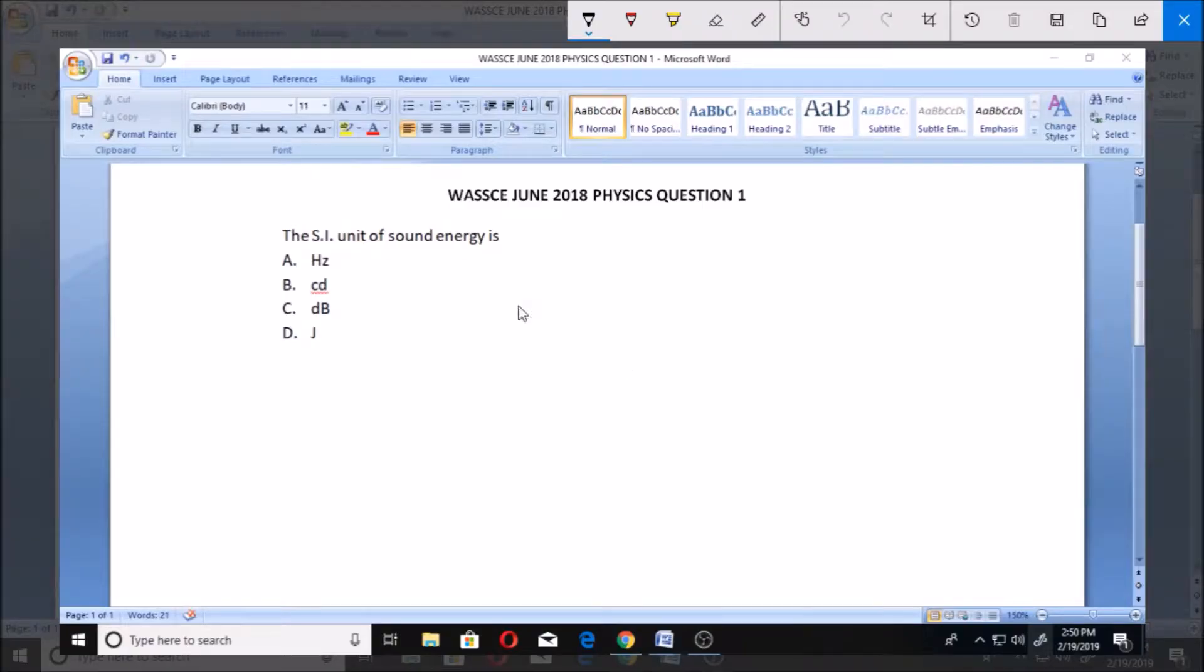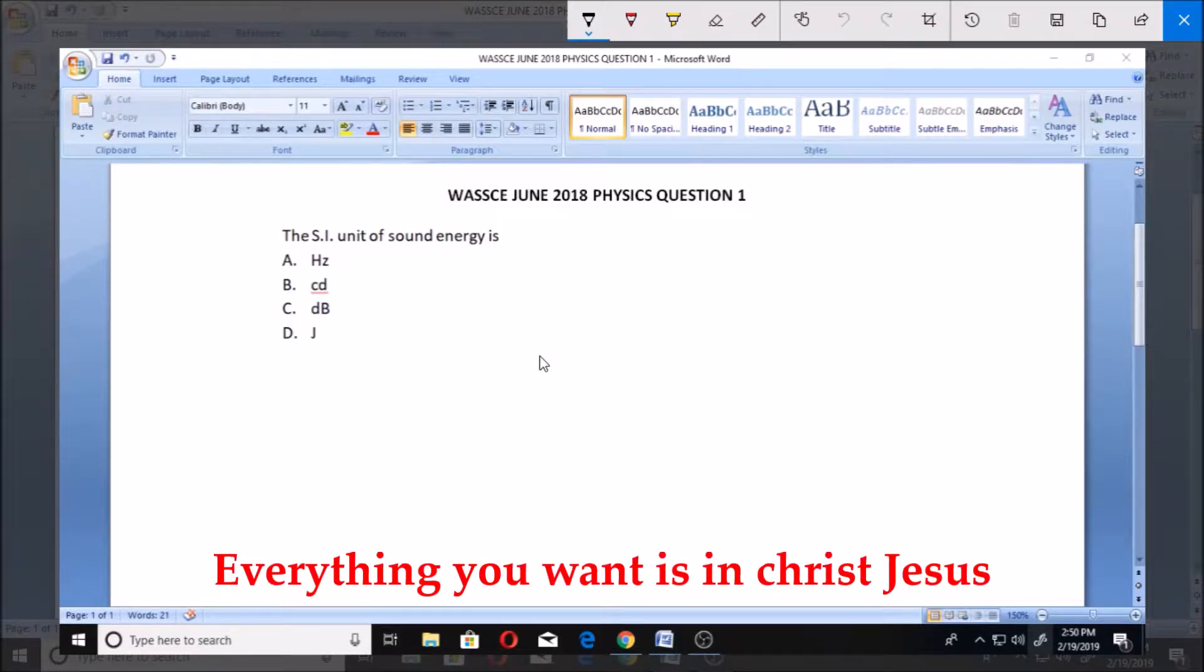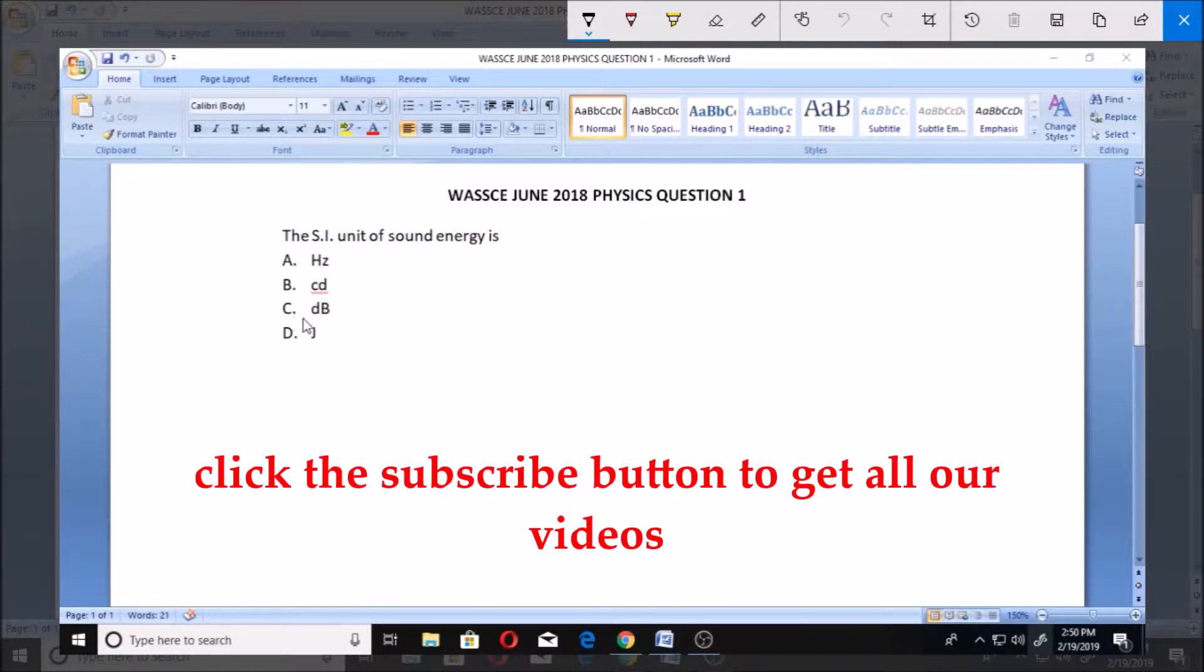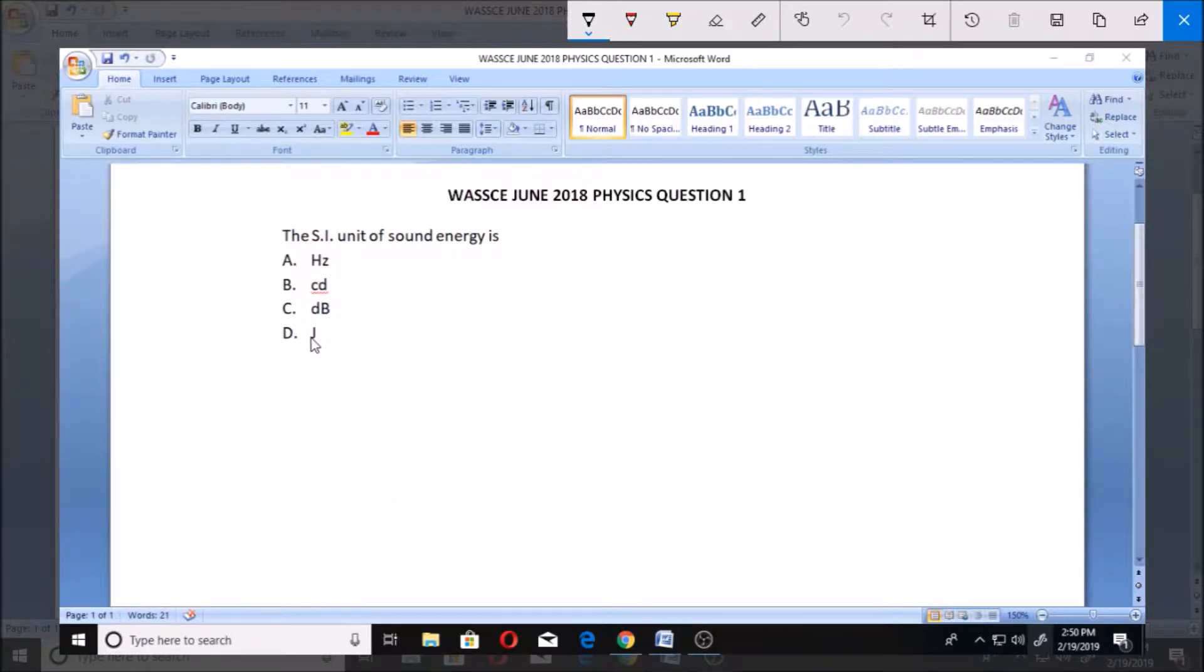Hello, welcome. Let's look at this WAEC question for Physics 2018, the number one question. The SI unit of sound energy is: A. Hertz (Hz), B. Candela (cd), C. Decibel (dB), D. Joules (J). So what is the SI unit?